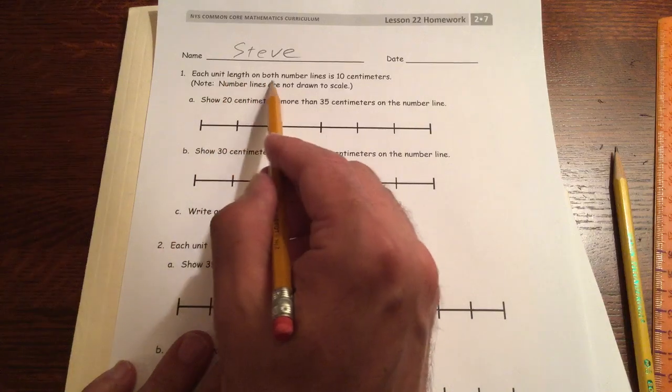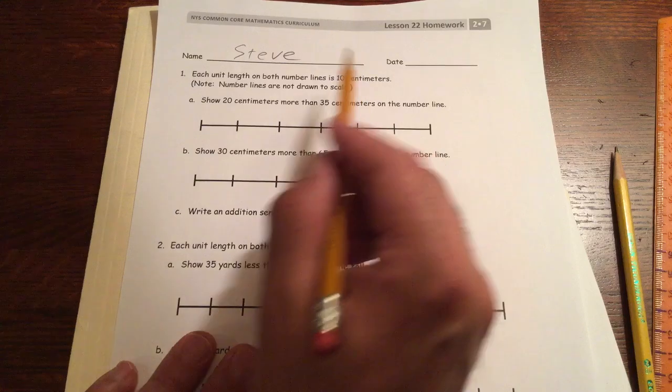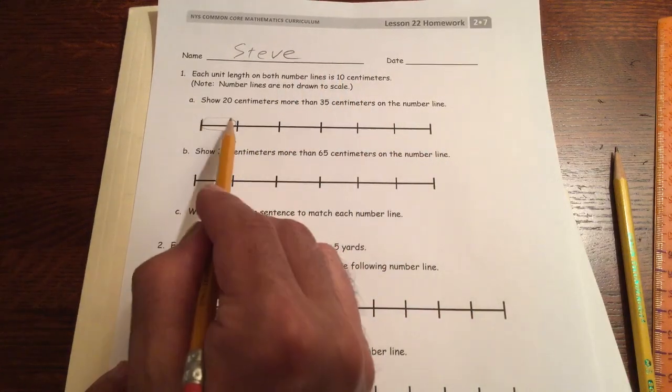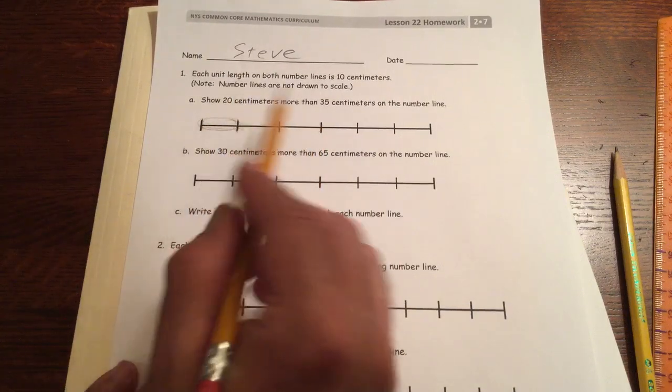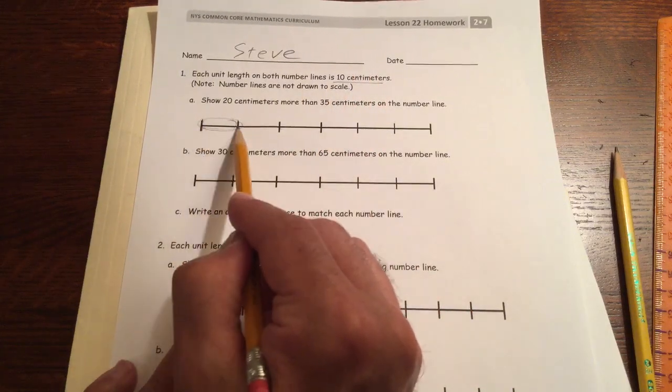Each unit length on both number lines is 10 centimeters, so unit lengths are the lengths in between the hash marks. These are hash marks. Units are what we are counting. The units are 10 centimeters, so these are 10 centimeters apart.